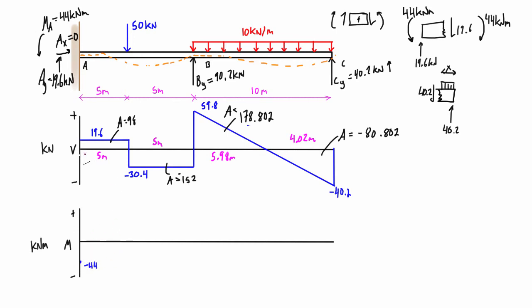All right, so in between this region, basically in the first five meters, we have this horizontal line here or constant shear. So it increases linearly by the magnitude of the shear force diagram, and it's increasing because this is a positive area. So we have negative 44 plus 98. That's going to bring us up to a value of positive 54 kilonewton meters.